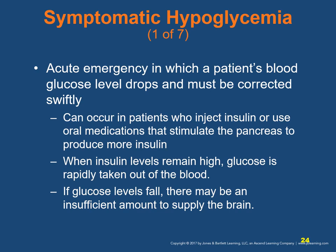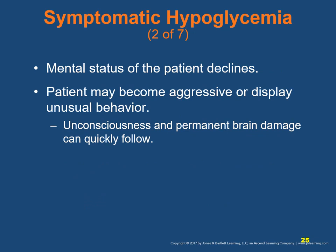Symptomatic hypoglycemia is an acute emergency in which a patient's blood glucose level drops and must be corrected swiftly. It can occur in patients who inject insulin or use oral medications that stimulate the pancreas to produce more insulin. When insulin levels remain high, glucose is rapidly removed from the blood. If glucose levels fall too low, there may be insufficient glucose to supply the brain, and the patient's mental state may decline — they may become aggressive, display unusual behavior, become unconscious, or sustain permanent brain damage.